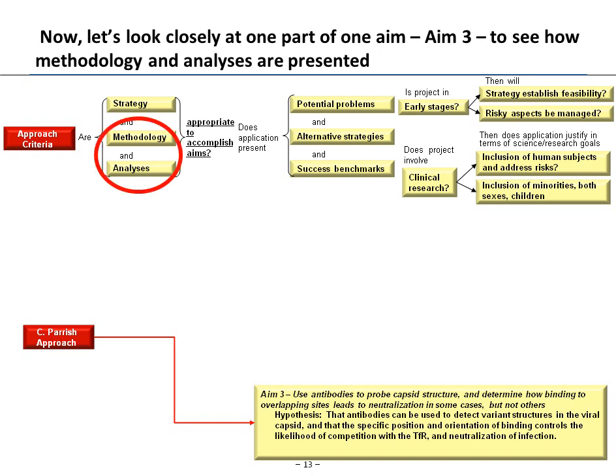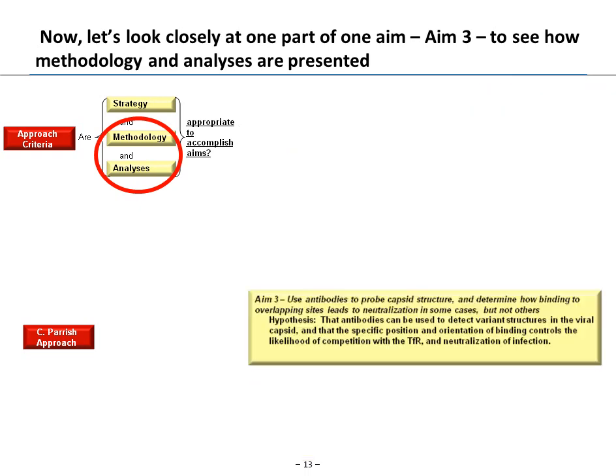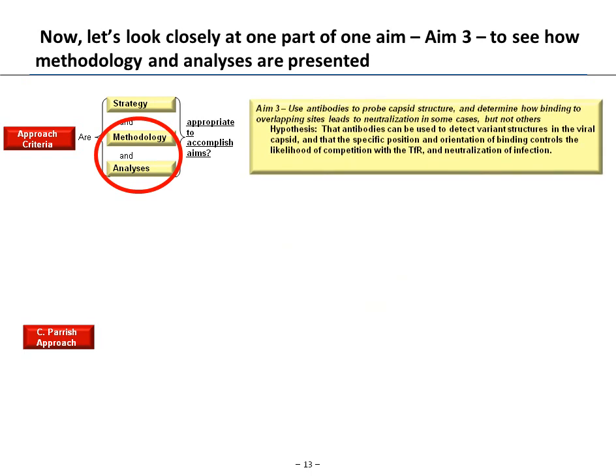Now let's look closely at one part of Aim 3 to see how the methodology and analysis components are presented. Parrish uses antibodies to probe the capsid structure and determine how binding to overlapping sites leads to neutralization of infection in some cases but not others. His working sub-hypothesis is that antibodies can detect variant structures in the viral capsid, and that the specific position and orientation of binding controls the likelihood of competition with TFR and neutralization of infection — meaning the antibodies attach to the parvovirus capsid in a way that mitigates TFR binding, which is required for infection to occur.